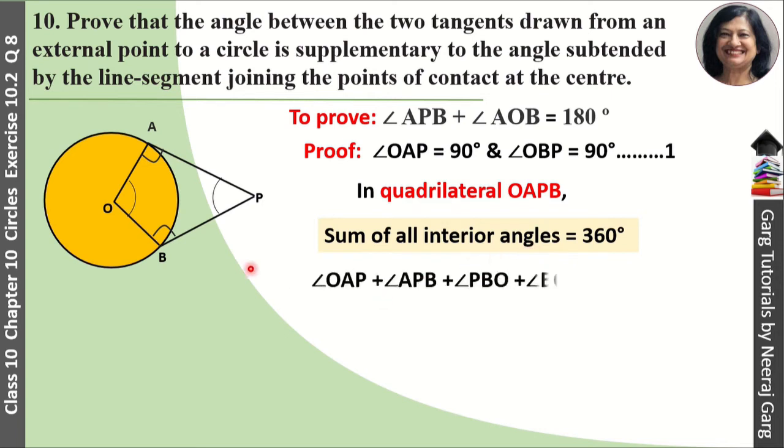It means angle OAP plus angle APB plus angle PBO plus angle BOA equals 360 degrees.